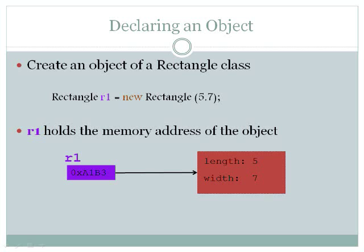R1 holds the memory address of the object. As you see in the diagram below, 0xA1b3 is the sample memory address for the object R1. The parameters passed to it are 5 and 7.